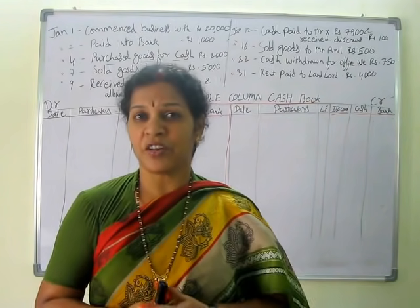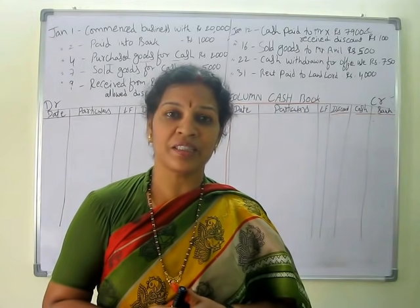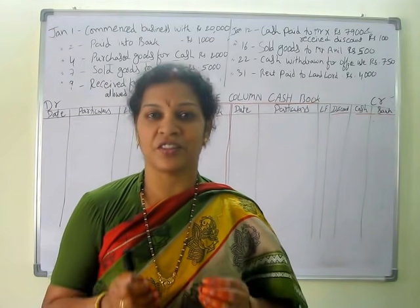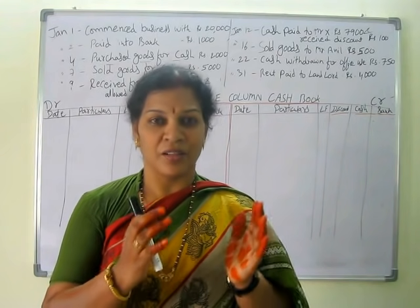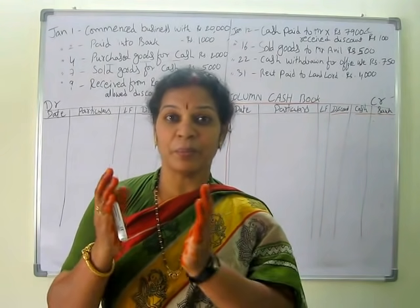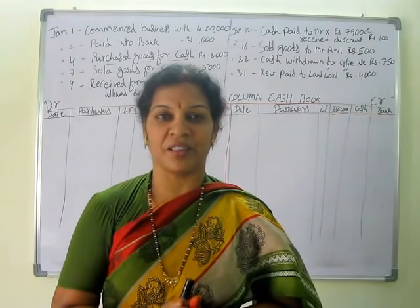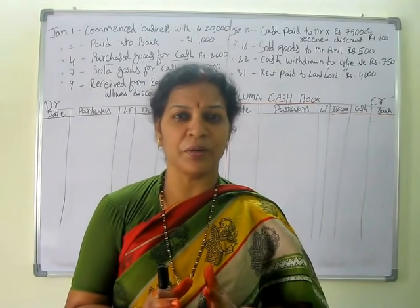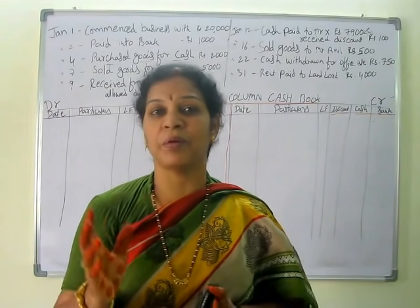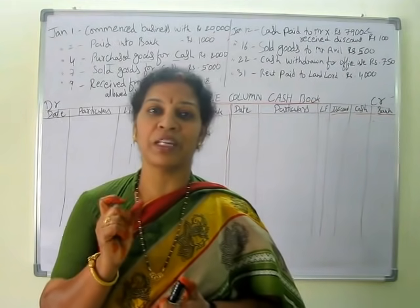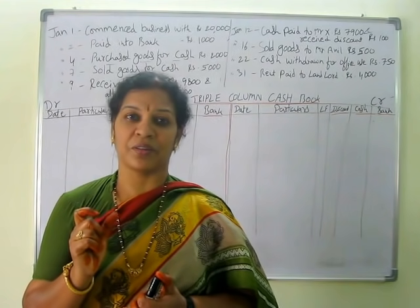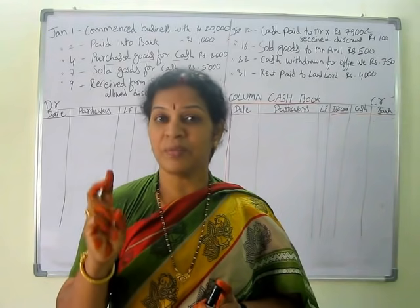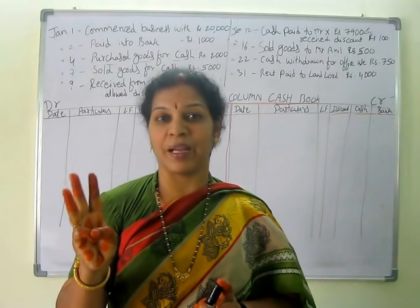What is a cash book? Cash book is a book which contains only the cash transactions — all the receipts on the debit side, all the payments on the credit side. Now on the same principles we are going to prepare the triple column cash book. Here we will have three columns: one is the discount column, second one is the cash column, and third one is the bank column.